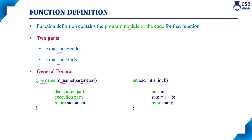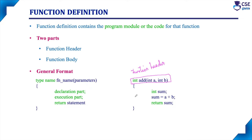Inside the function body, there are three parts. One is the declaration part, next is the execution part, and finally it should end with the return statement. This portion is nothing but the function header, and the remaining portion is nothing but the function body.